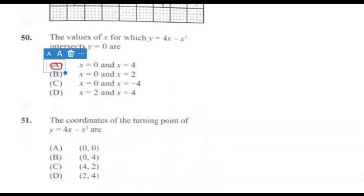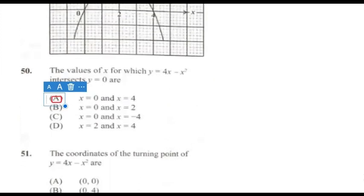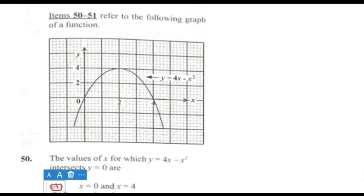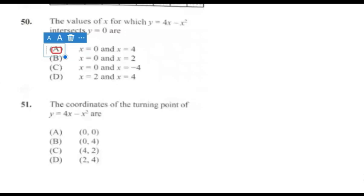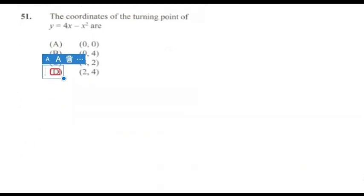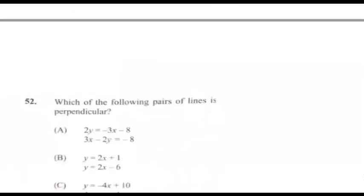Question 51: The coordinates of the turning point of the graph y = 4x − x². The turning point is the highest point on the graph, which is at (2, 4). Answer for 51 is D.